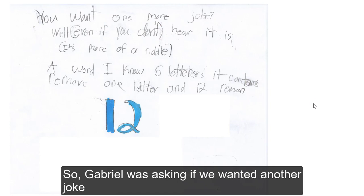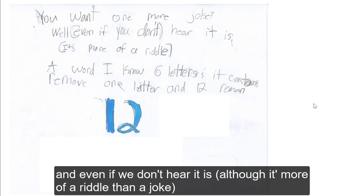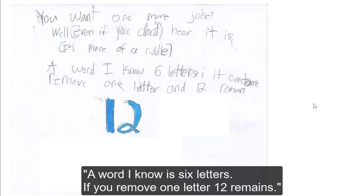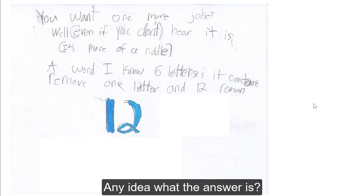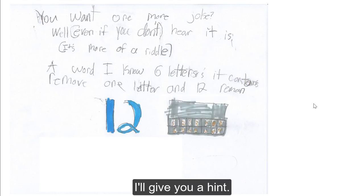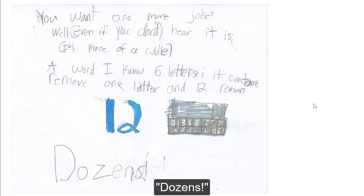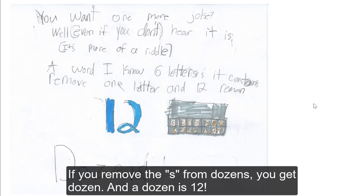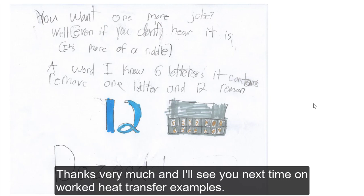So, Gabrielle was asking if we wanted another joke — and even if we don't, here it is, although it's more of a riddle than a joke. A word I know is six letters. If you remove one letter, twelve remains. The answer is 'dozens' — if you remove the S from dozens, you get 'dozen,' and a dozen is twelve. Thanks very much, and I'll see you next time on Worked Heat Transfer Examples.